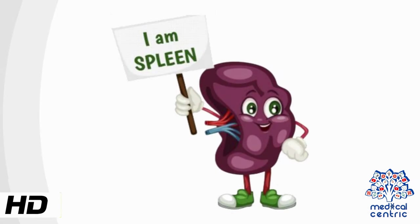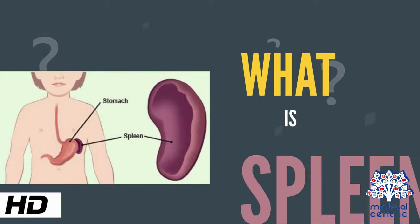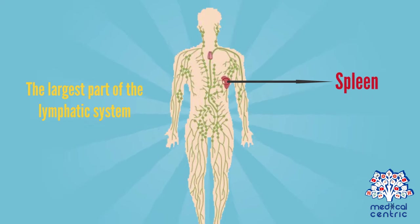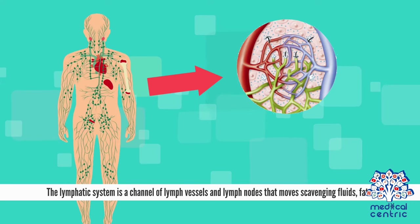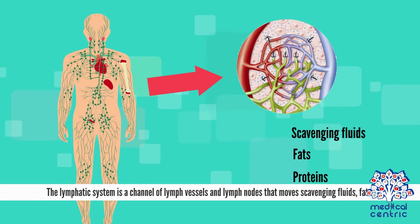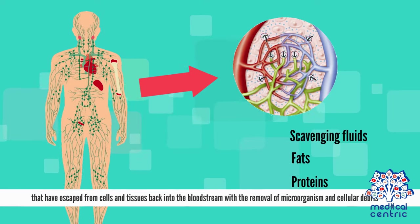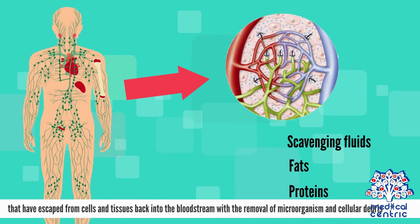Today's topic is spleen. What is spleen? The spleen is the largest part of the lymphatic system. The lymphatic system is a channel of lymph vessels and lymph nodes that moves scavenging fluids, fats, and proteins that have escaped from cells and tissues back into the bloodstream, with the removal of microorganisms and cellular debris.